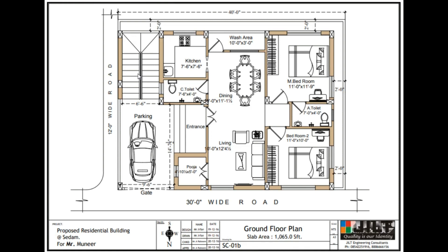This plan is according to Vastu only. On the south-east face we have a kitchen. The size of this kitchen is 7 and a half feet by 7 and a half feet. Adjacent to that we have a common toilet. The dimension of the common toilet is 7 feet 6 inches in length and 4 feet in width.